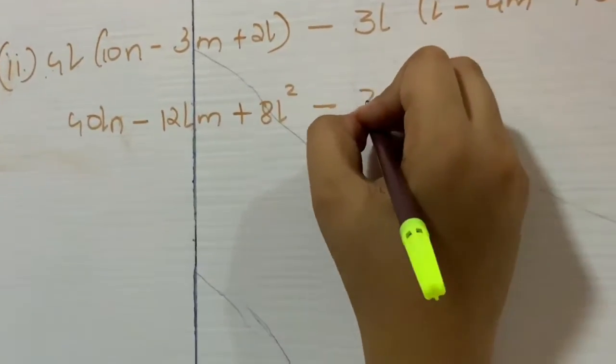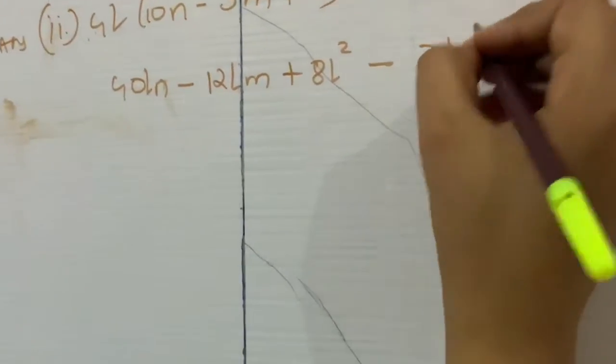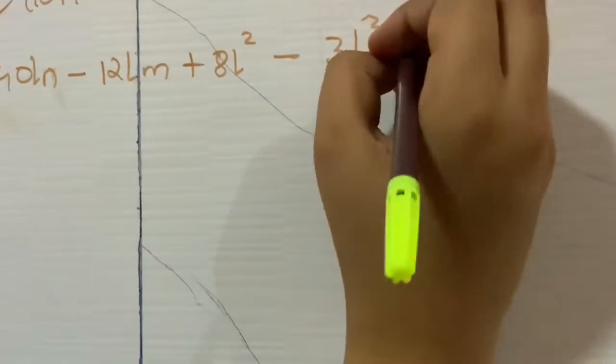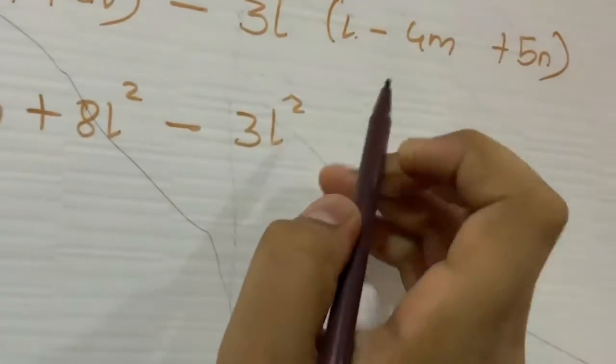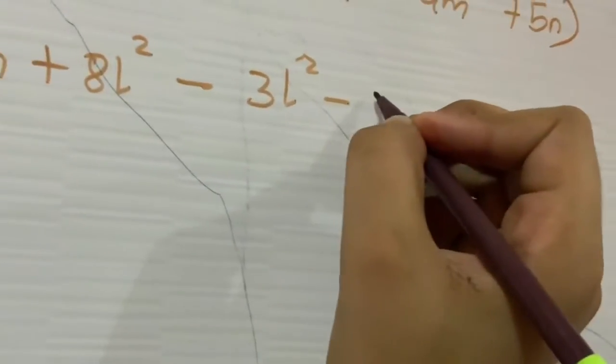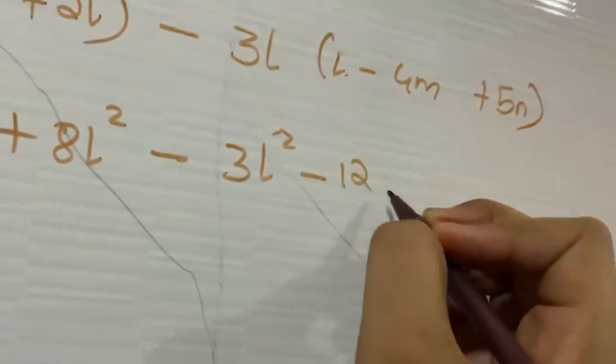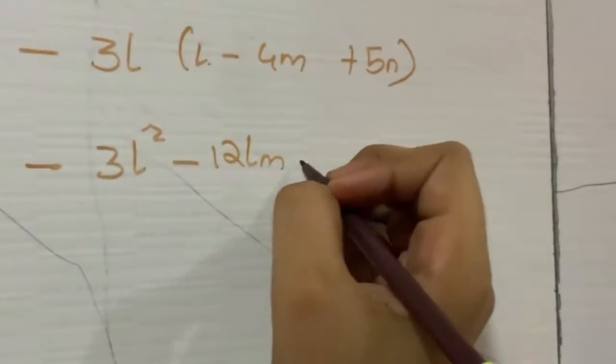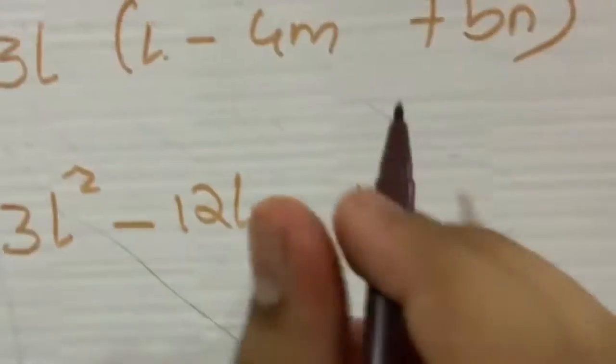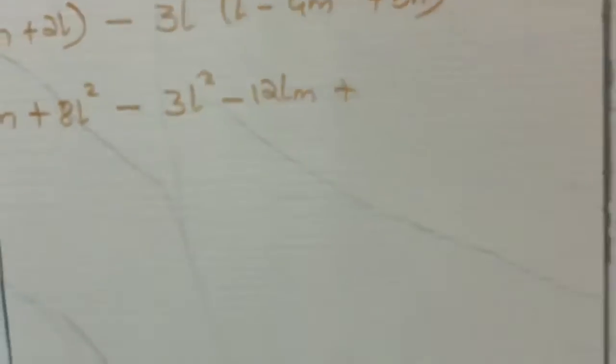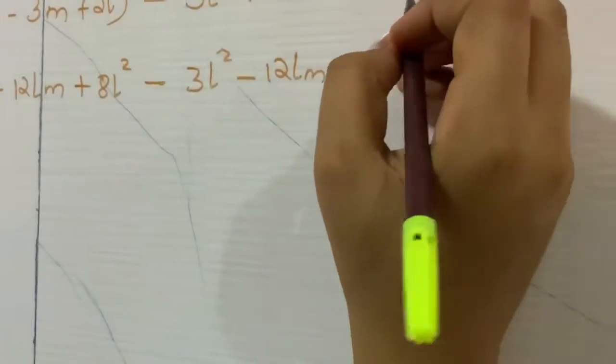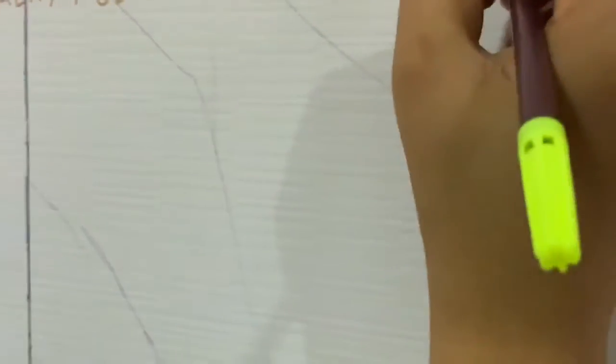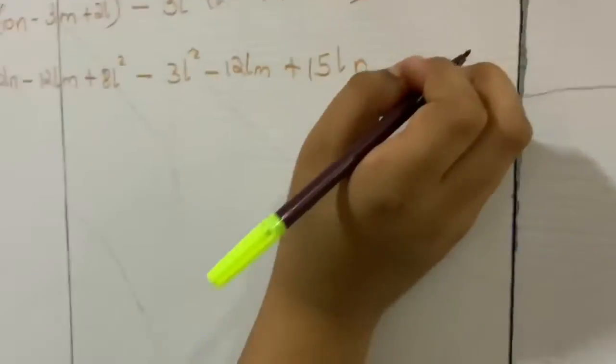Minus 3L square. Now here there is one more L. We need to multiply with this. So we got 3L square. Minus 12LM plus. Now 3L plus 5N which will come as 15LN.